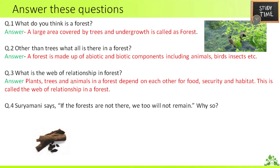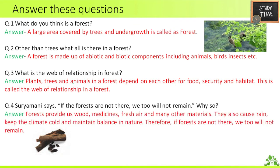Third question — what is the web of relationship in a forest? Trees, plants, and animals in the forest depend on each other for food, security, and habitat; this is called the web of relationship in a forest. Fourth — Suryamani says if the forests are not there, we too will not remain — why? Forests provide us wood, medicine, fresh air, and many other materials. They also cause rain, keep the climate cool, and maintain balance in nature; therefore if forests are not there, we too will not remain.